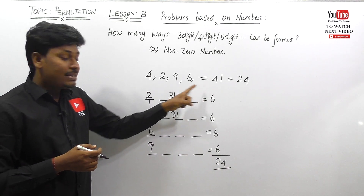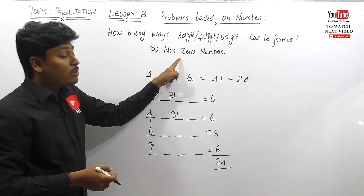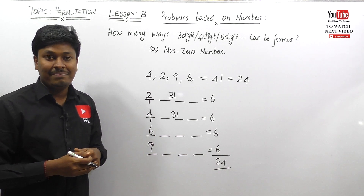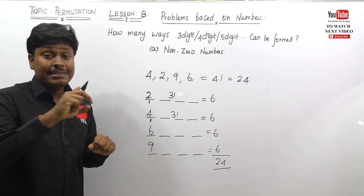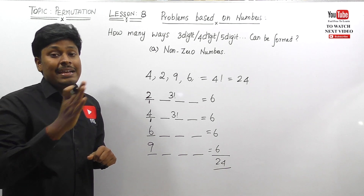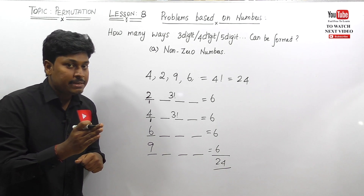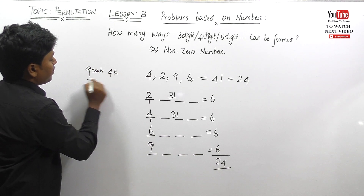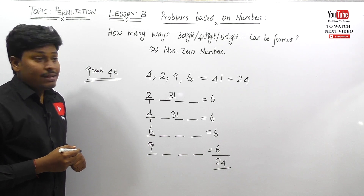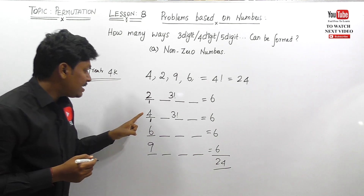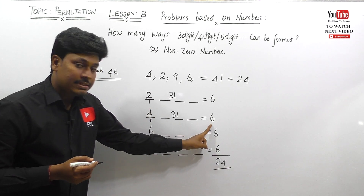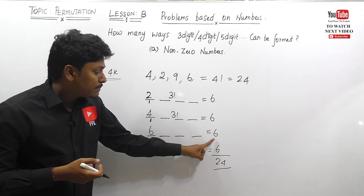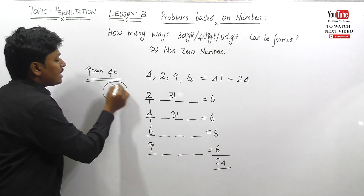Using this logic, if they ask how many four-digit numbers are greater than 4000, we consider the ranges 4000, 6000, and 9000 — that is 6 + 6 + 6 = 18 numbers. The 2000-range numbers are not greater than 4000, so they are excluded.